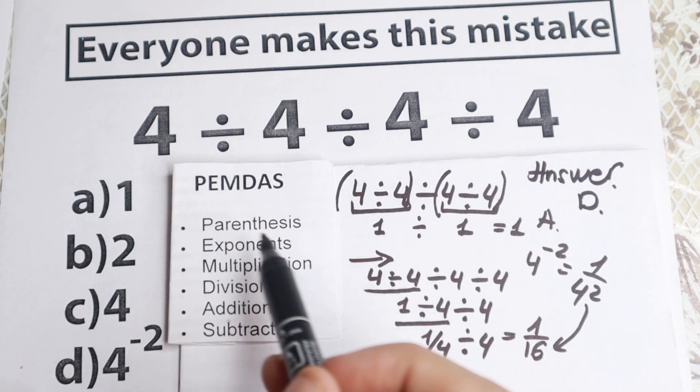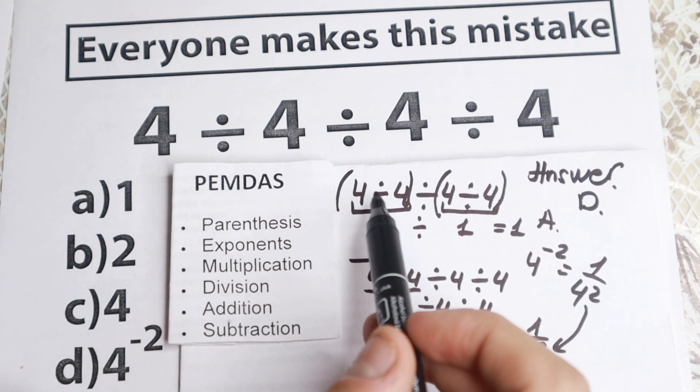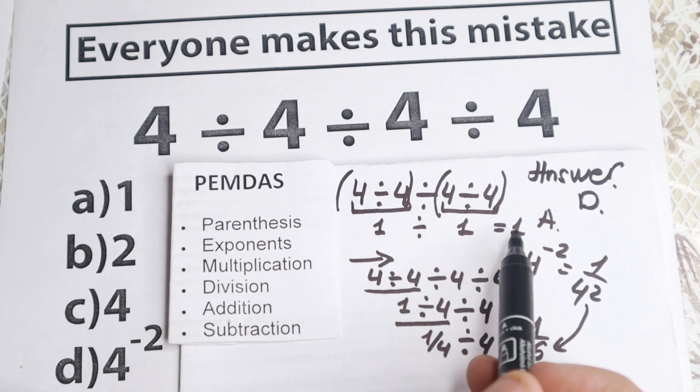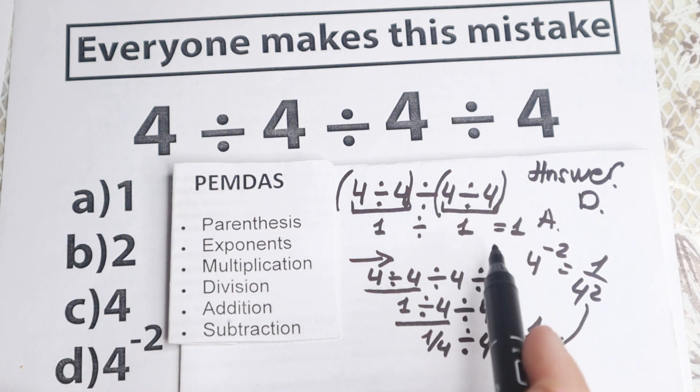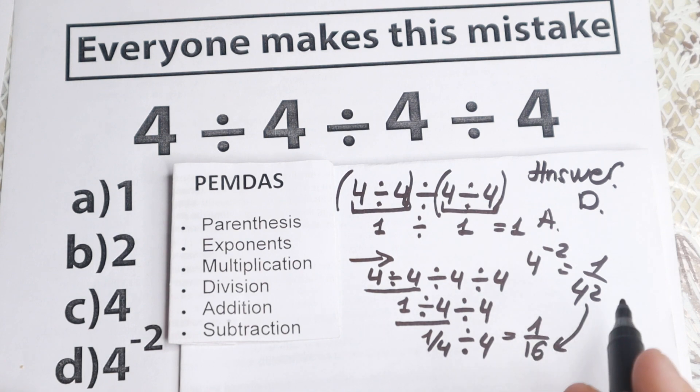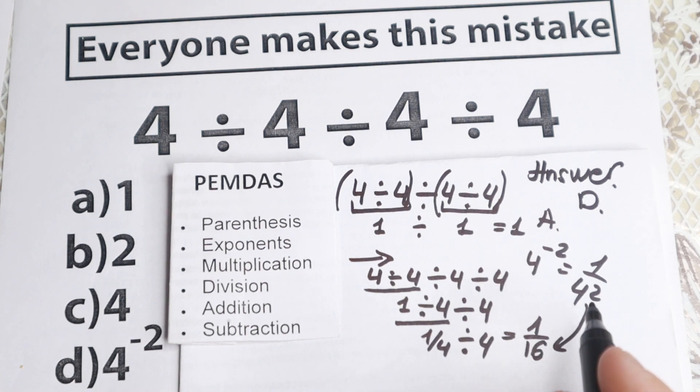And I explained why A is incorrect, because if we have parentheses it will be the correct answer, but we don't have parentheses. So our correct answer is 1 over 16. Of course, if you made this error, I'm happy you made it, because you won't make this again.